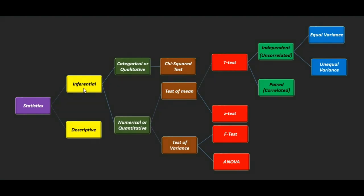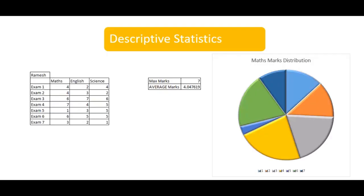As we all know, statistics has two types. The first one is inferential and the other one is descriptive. In descriptive statistics we know the behavior of the population and we try to visualize it using bar charts, box plots, or pie charts.